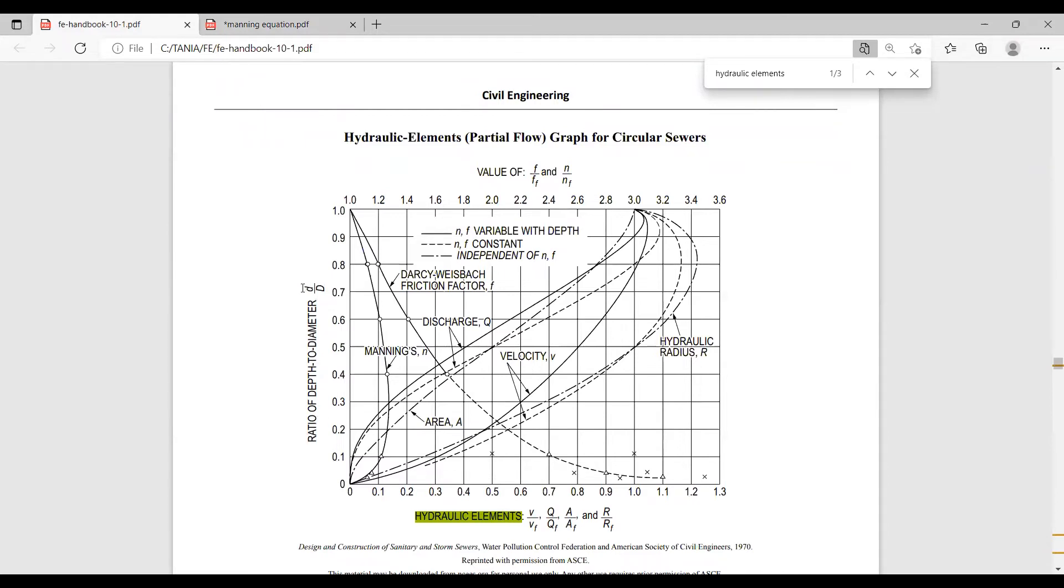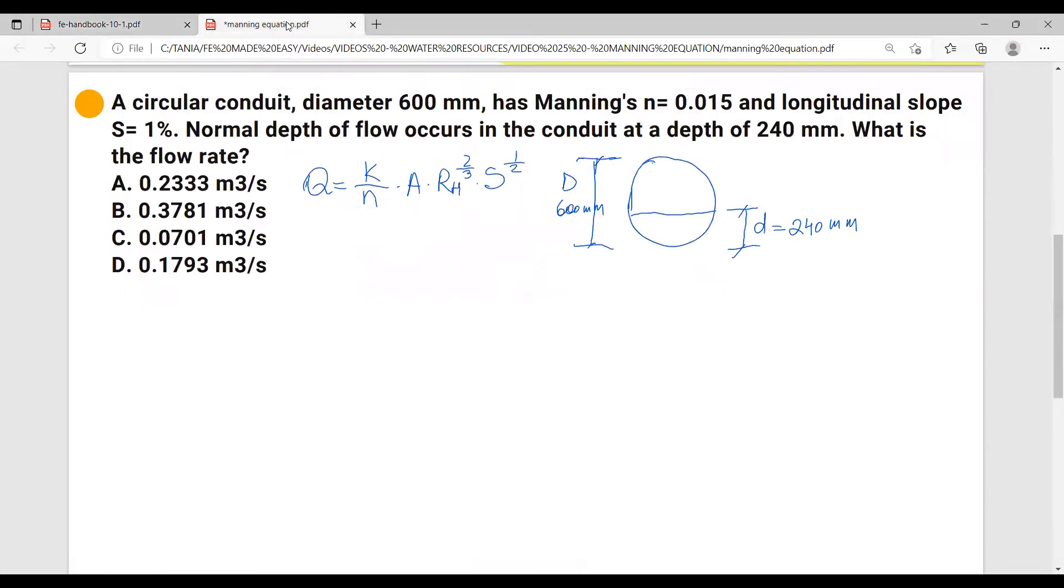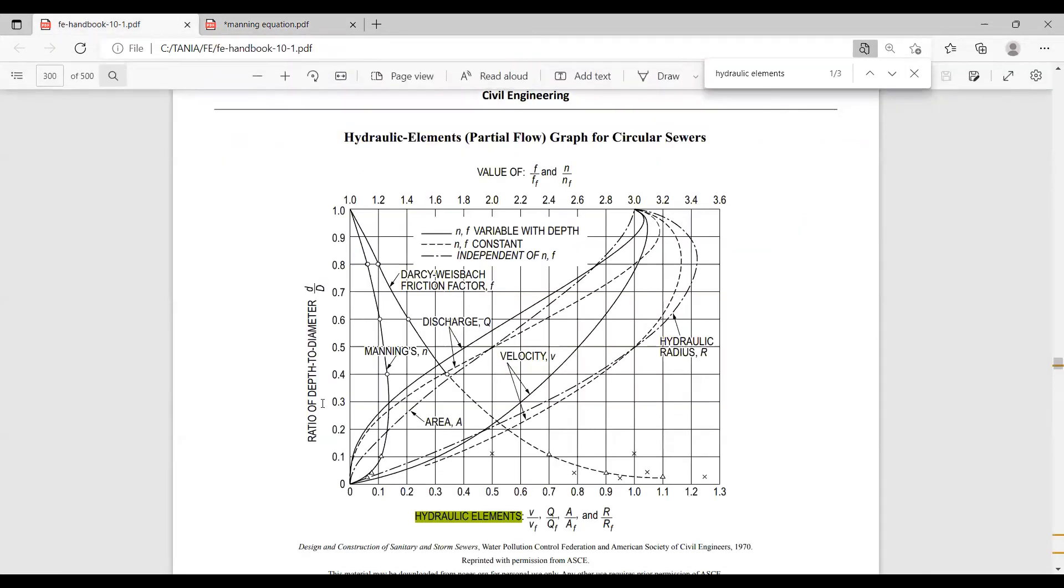So in our case, d over diameter equals to 240 millimeters over 600 millimeters and that equals to 0.4. So going back to the FE handbook at 0.4.